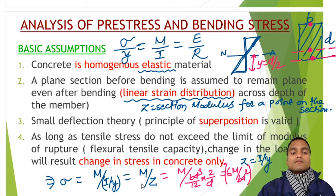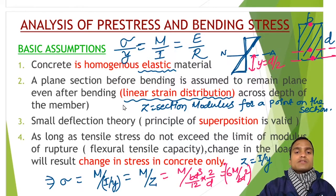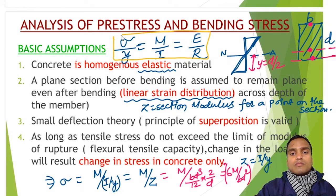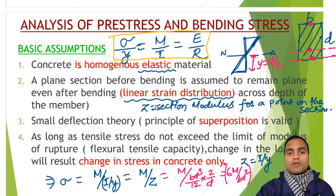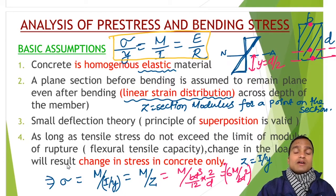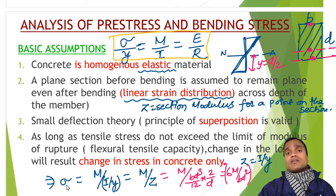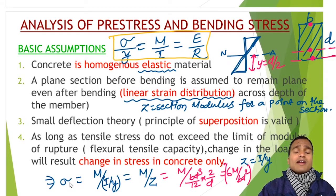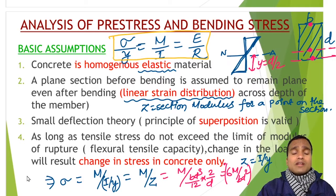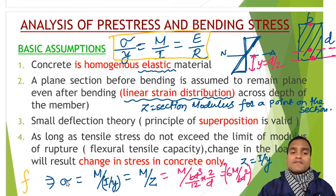So the expression for bending stress σ is based on the Euler-Bernoulli equation: σ/y = M/I = E/R. This σ is the bending stress. Note that bending stress is sometimes represented by the Greek letter σ and sometimes by the Roman letter f — don't get confused, both are used in different textbooks.